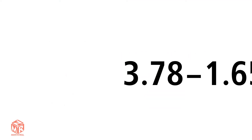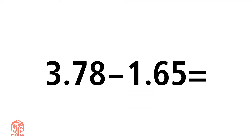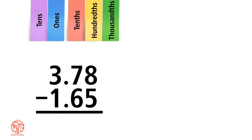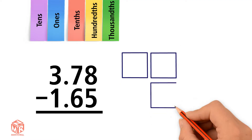Let's do another example: 3.78 minus 1.65. We start by lining up the decimal points. Let's draw the model of 3.78. 3.78 has 3 ones, 7 tenths, and 8 hundredths. We represent the hundredths as circles.